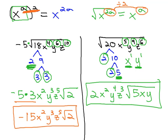Again, when taking a square root with variables, we divide the exponents by 2 to tell us how many come outside. If there's a remainder, that's how many will remain inside the radical.